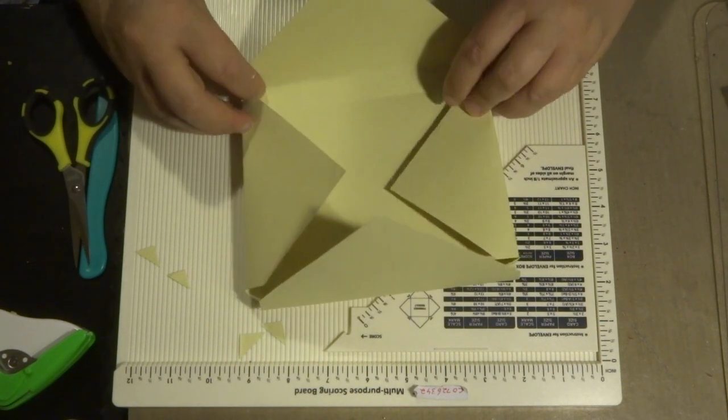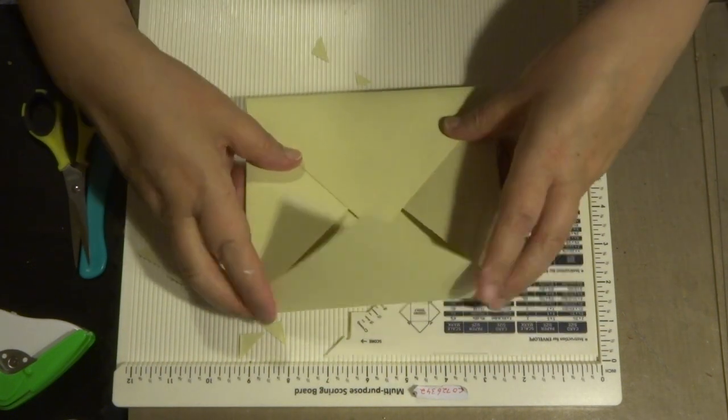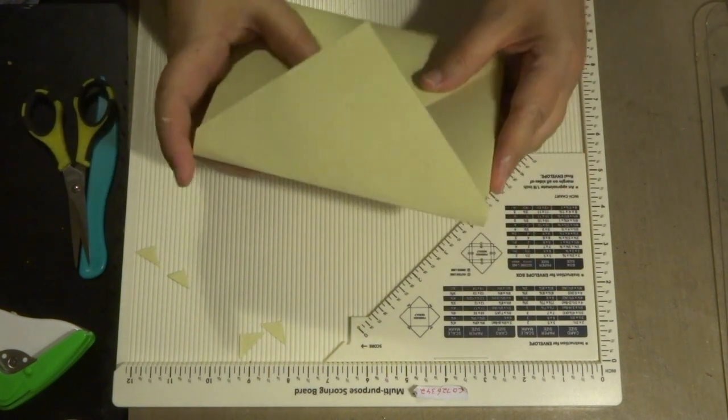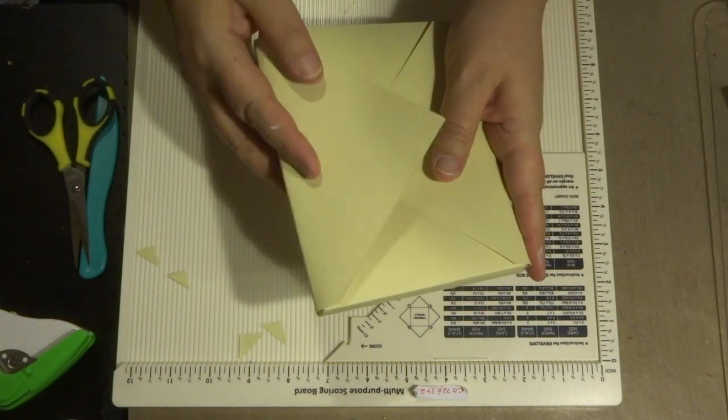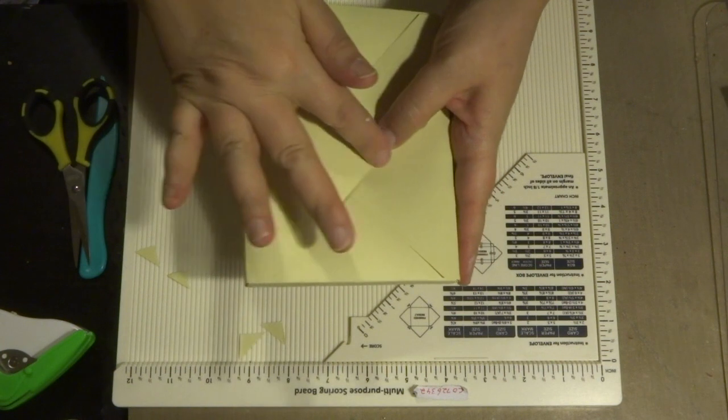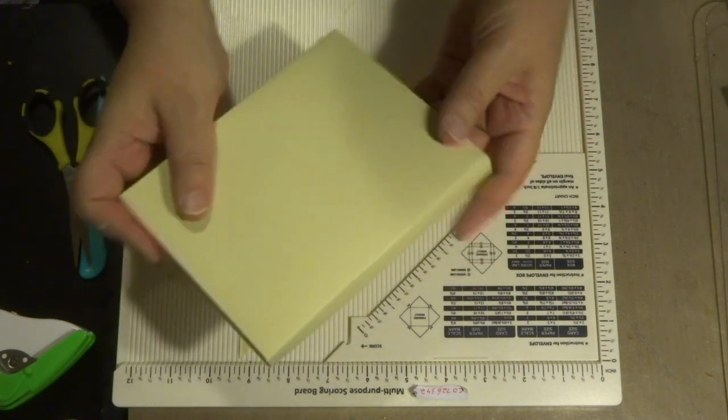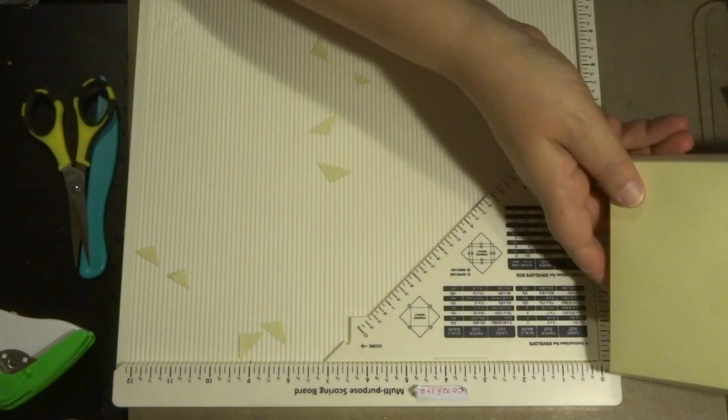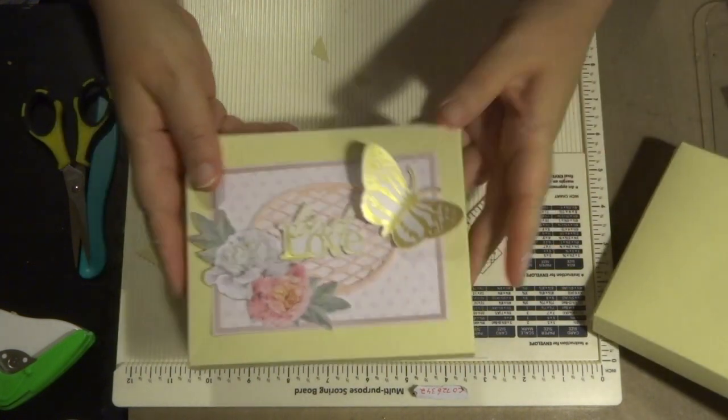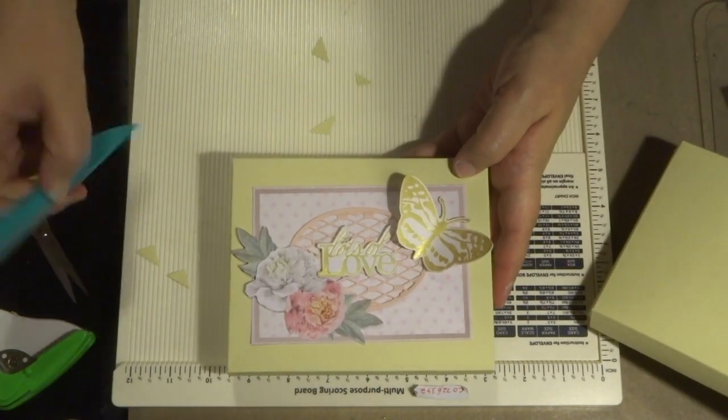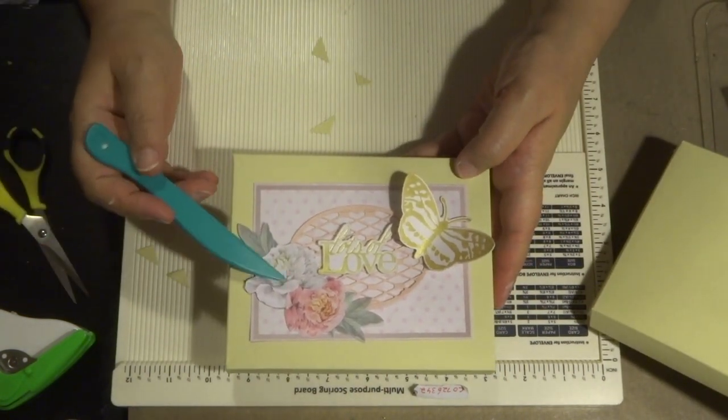So all I have to do now is put some double-sided tape to close the sides. Of course you're going to leave the top flap open and you can adhere it with a beautiful little sticker. I decorated the front and you can see the one that I have here. I decorated it with some more of the papers and the ephemera.